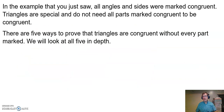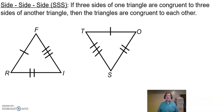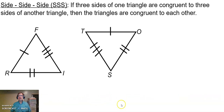Now triangles are special. With triangles, we don't need all the sides and all the angles — we can get rid of some of them. There are five different ways that we can do this. The first way that we can say two triangles are congruent is by saying Side-Side-Side. SSS says if three sides of one triangle are congruent to the three sides of another triangle, then those two triangles are congruent to each other.